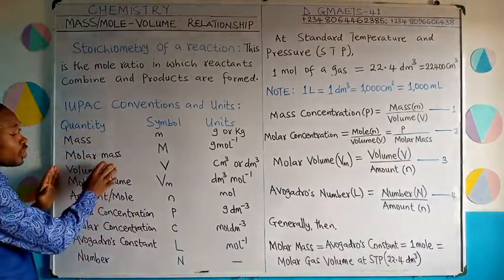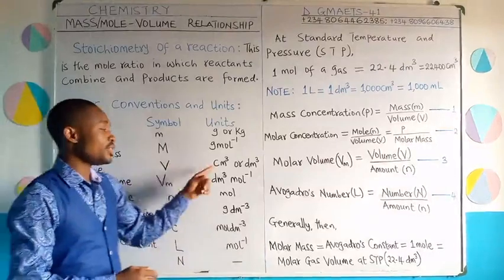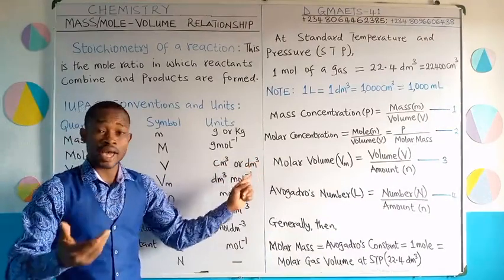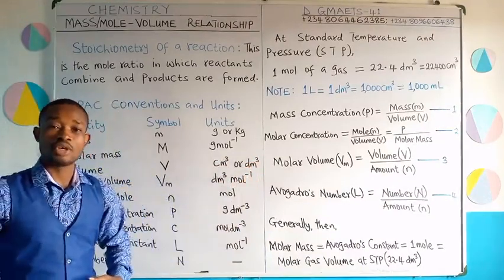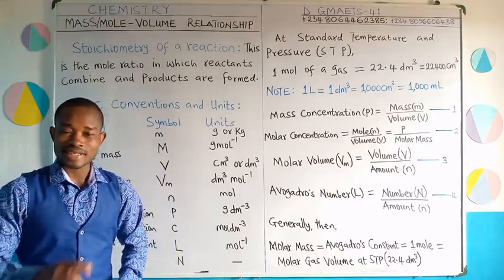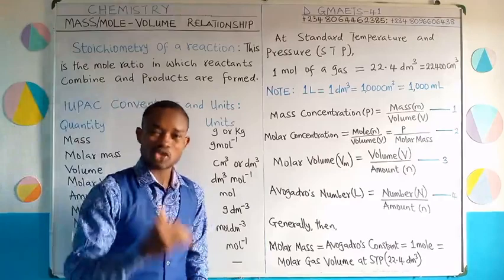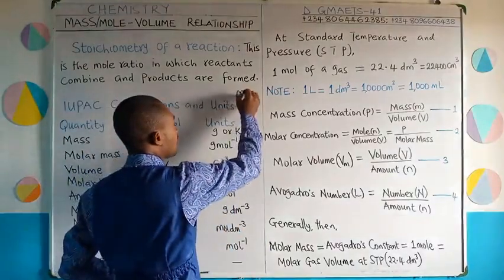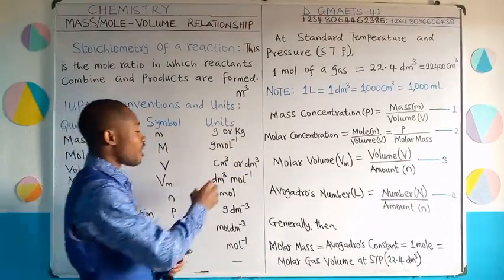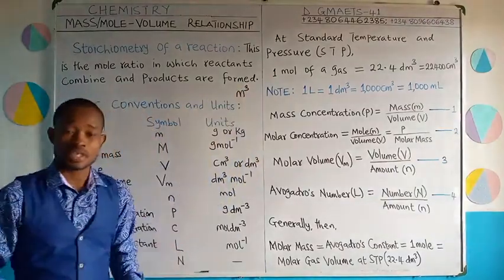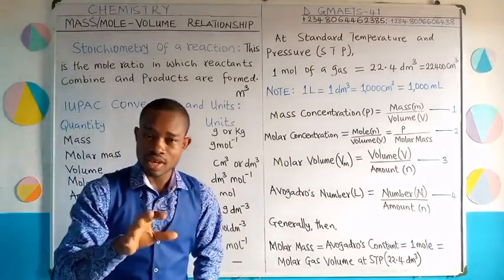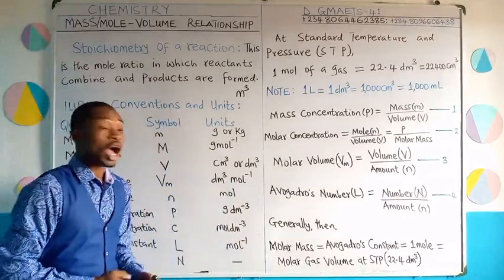Now we have volume. Volume has the symbol V and the unit is cubic centimeter or cubic decimeter — that is cm³ or dm³. Note that cm³ or dm³ is not the SI unit of volume; they are smaller units. The SI unit of volume is actually m³, that is cubic meter. However, in chemistry calculations, volume is usually given in cm³ or dm³, so we will focus on those.